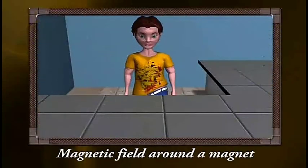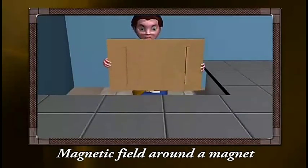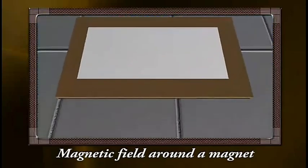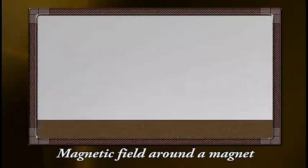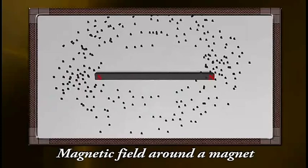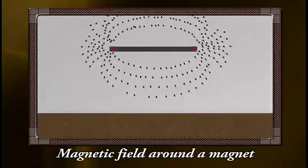Let us see how the magnetic field around a magnet can be detected with the help of a simple activity. Let us place a magnet on a cardboard sheet. Now, uniformly sprinkle some iron filings over it. Did you see the iron filings arranging themselves in a definite pattern?